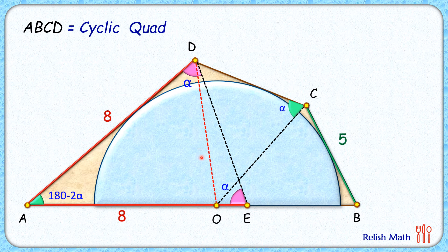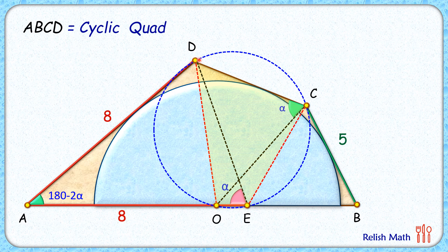Now we join DO. If we take DO as a chord, it's subtending alpha degrees at point C and alpha degrees at point E. By theorem we can say that CEOD is a cyclic quadrilateral.